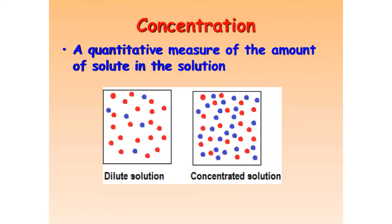All right, so what is concentration exactly? Concentration is a quantitative measure of the amount of solute in the solution. So it tells us how much solute do we have dissolved in the solution. So here you see you have very few blue solute molecules, so this is a dilute solution. As compared to this one, we have a whole bunch of blue, so that's a concentrated solution.